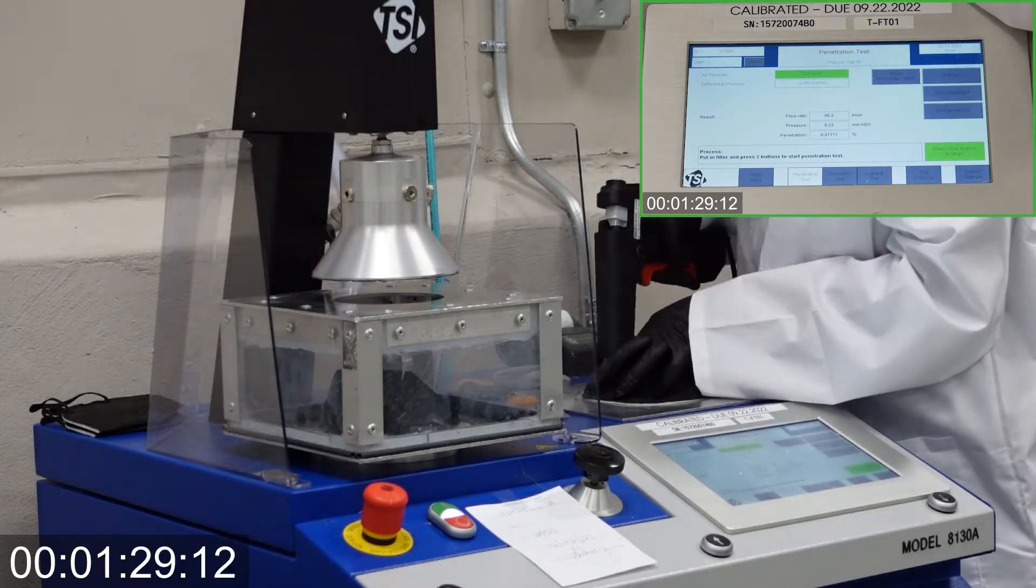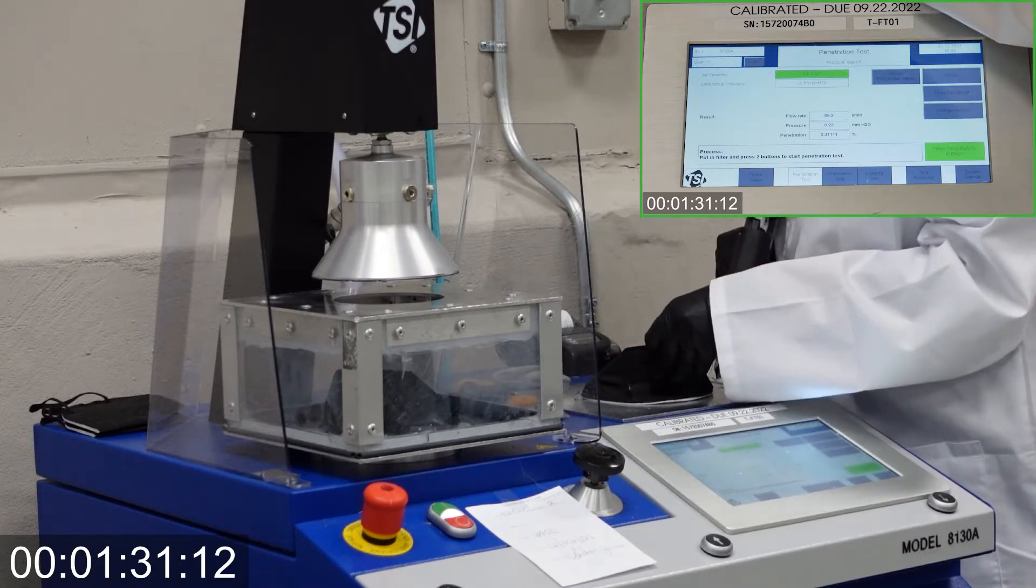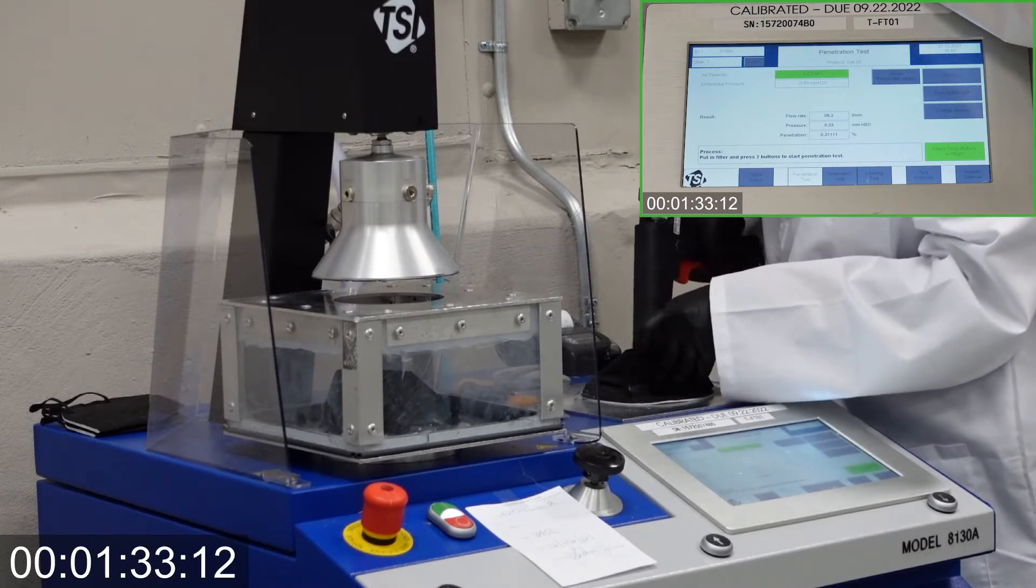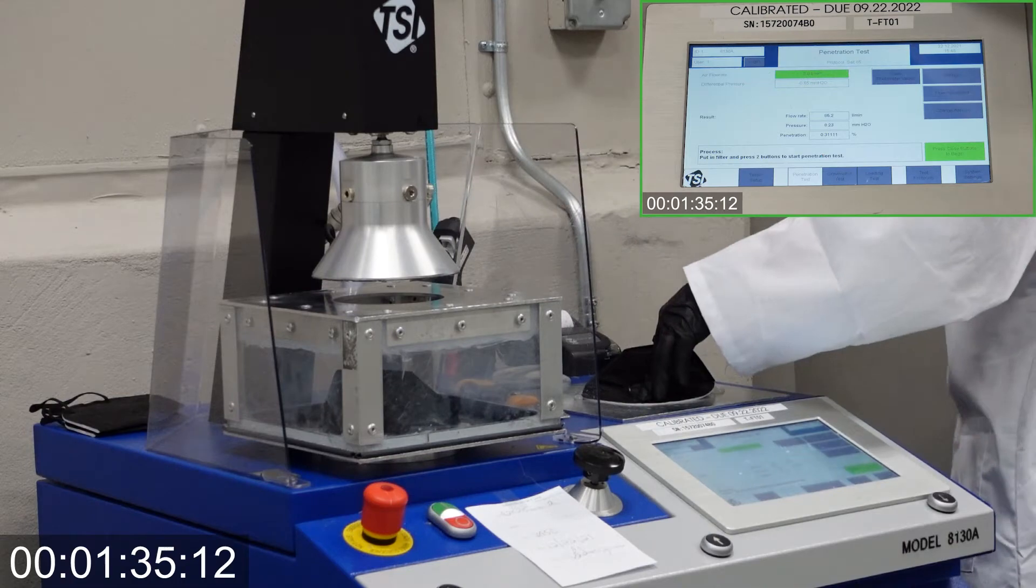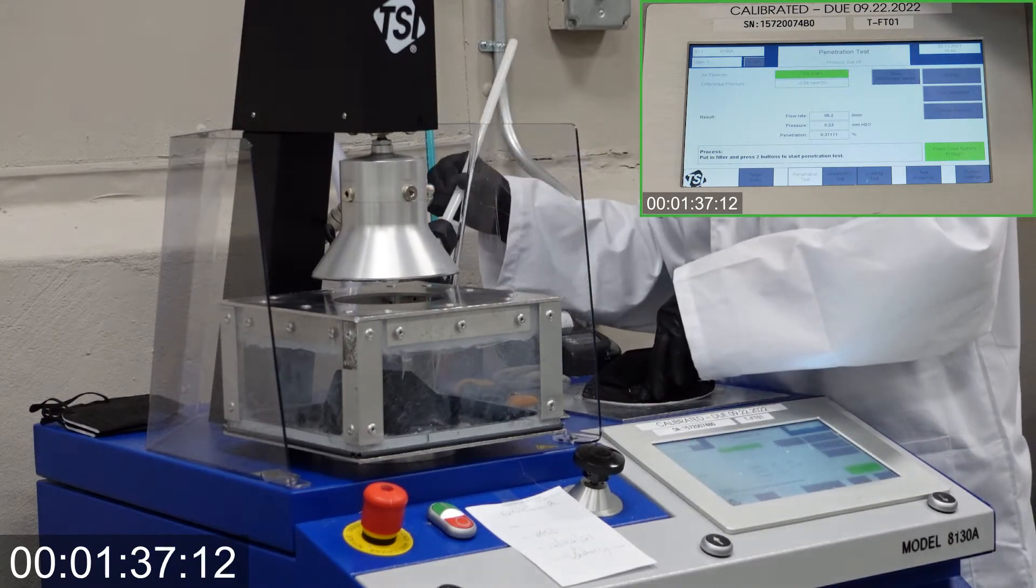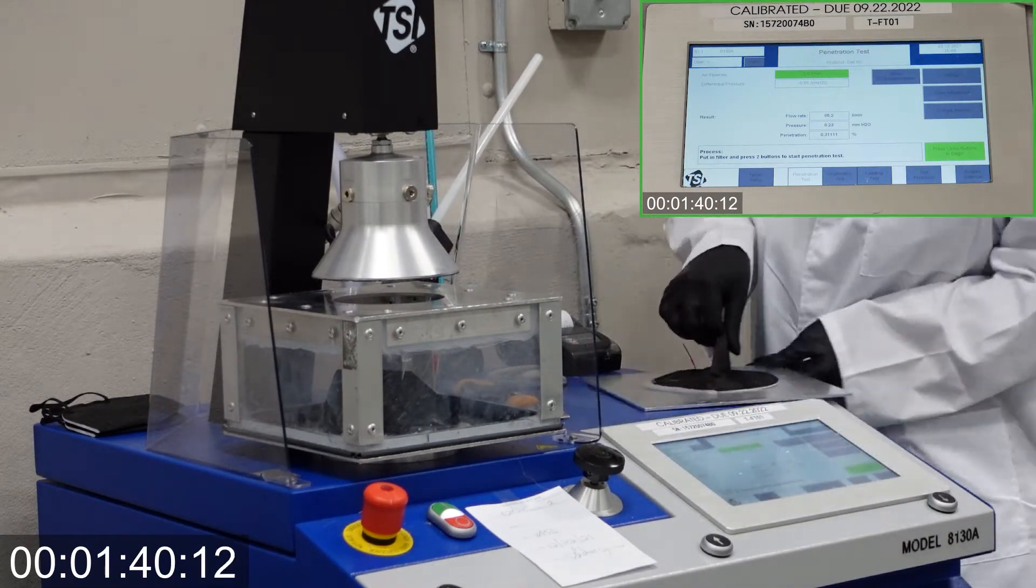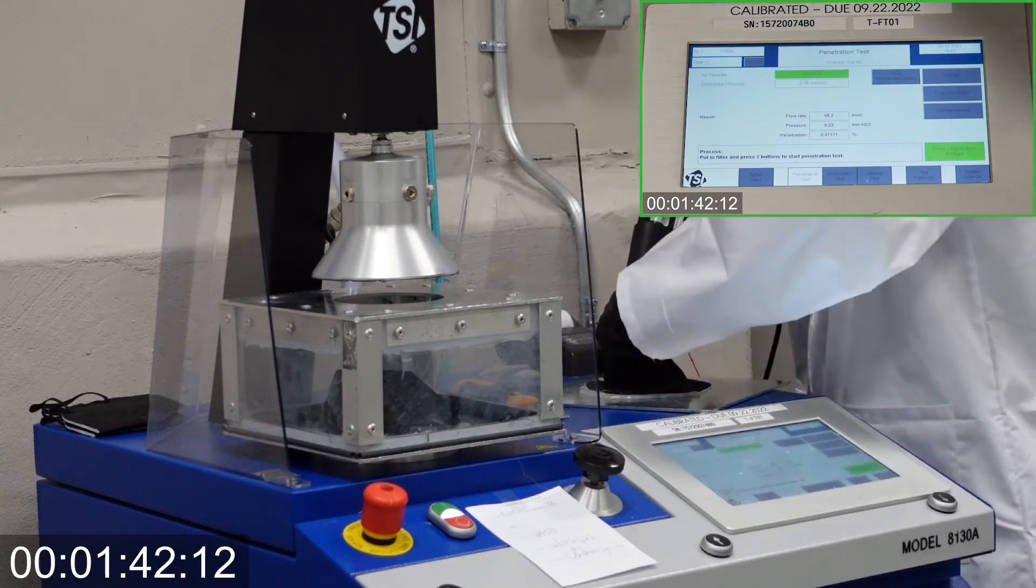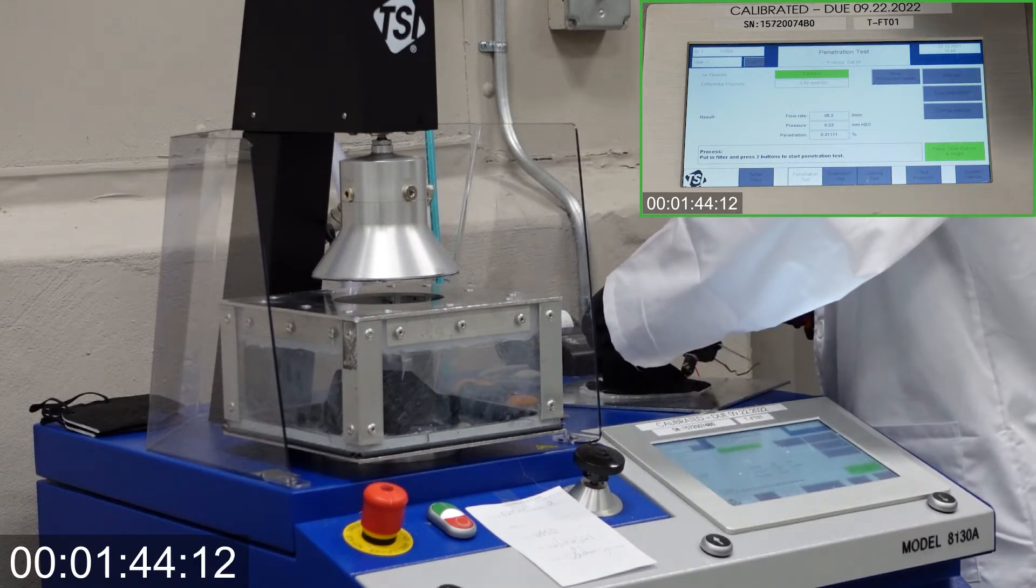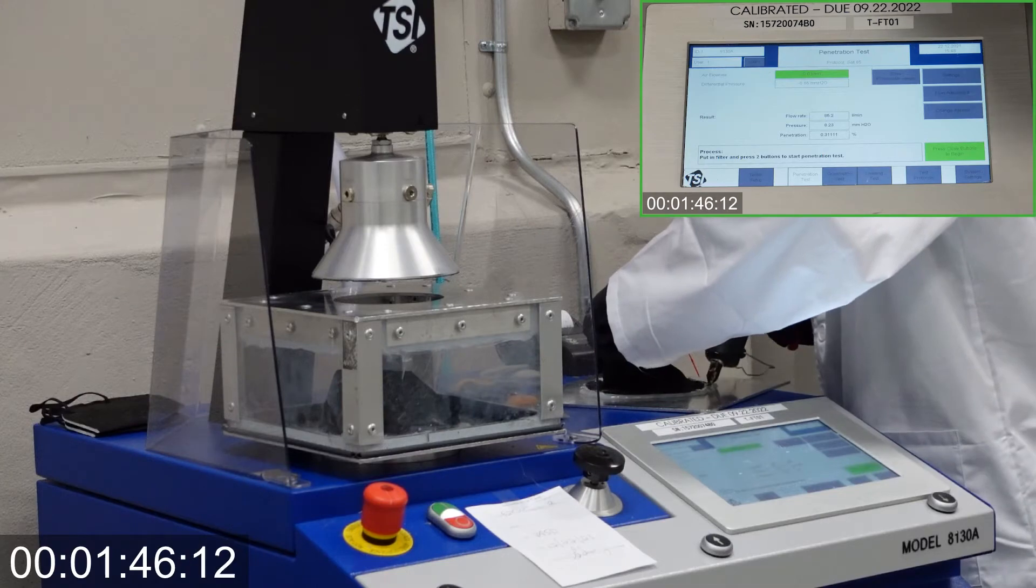Additionally, we conduct testing on a regular basis by using TSI green line papers to make sure the TSI 8130A filter tester is giving accurate results. TSI visits our facility annually and conducts field service for the 8130A tester for calibration purposes.